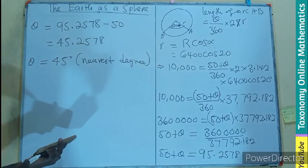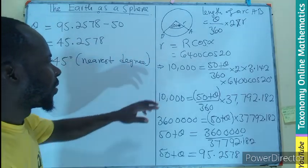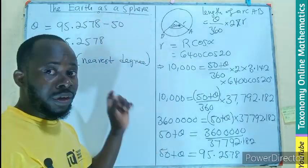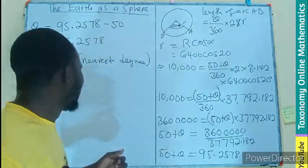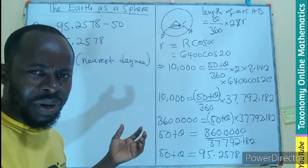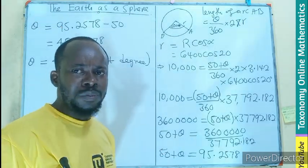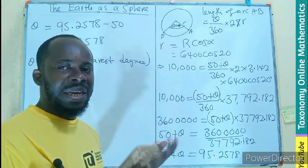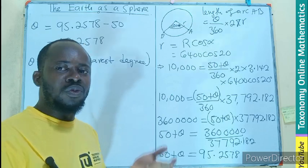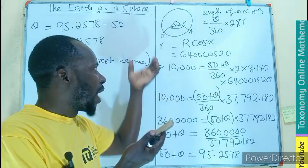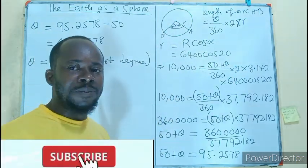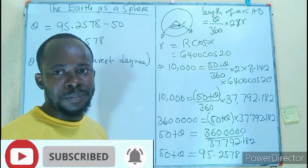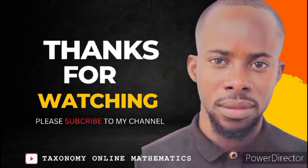So theta is going to be 45 degrees to the nearest degree. That's the nearest whole number. So the angle that town B is having on the longitude west is going to be 45 degrees. And I believe the concept is understood by you. First, how to draw the sphere and represent the position on it. How to identify whether it is a small circle. And how to bring out that sector and calculate. I think the concept is clear. Like, share, comment and subscribe. Thank you.